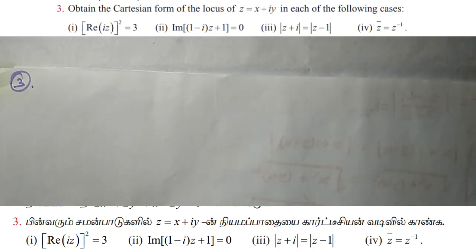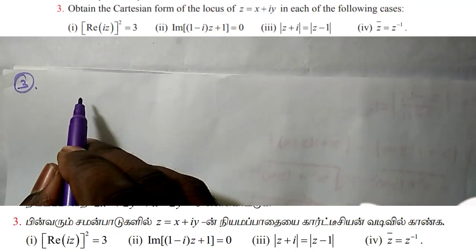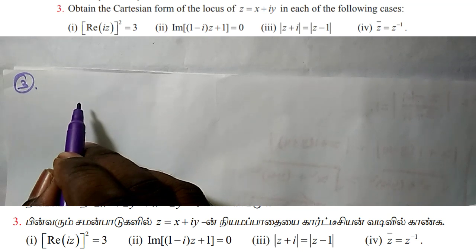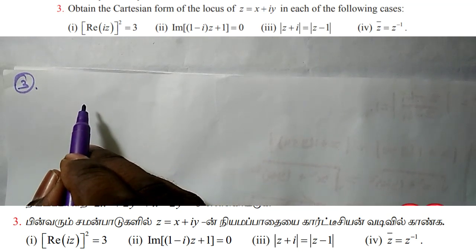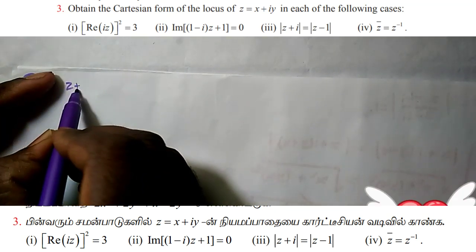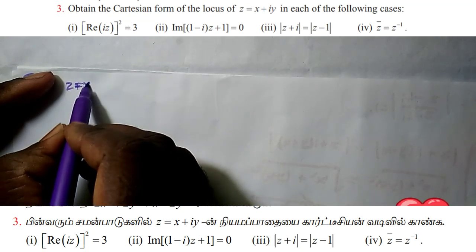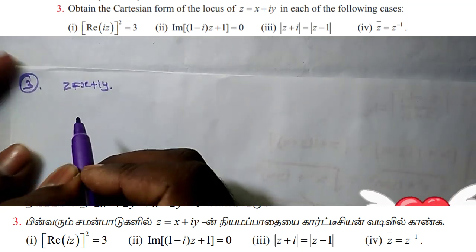Hi friends, welcome, this is Saty. In this video, we will obtain the Cartesian form of the locus z equals x plus iy in each of the following cases.